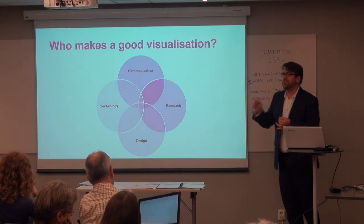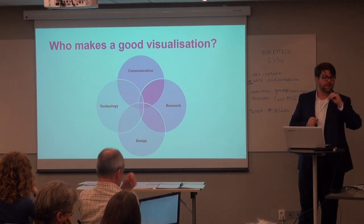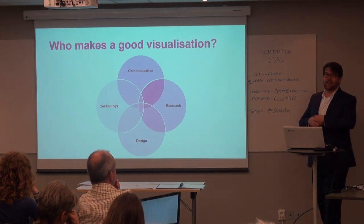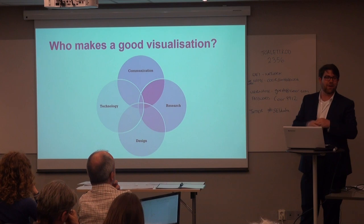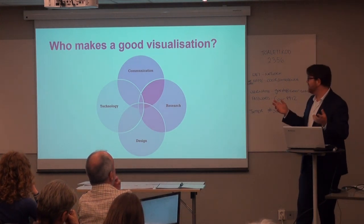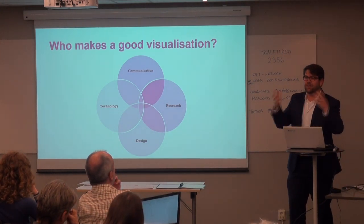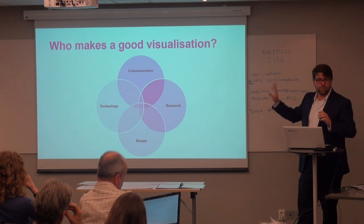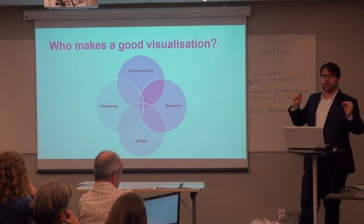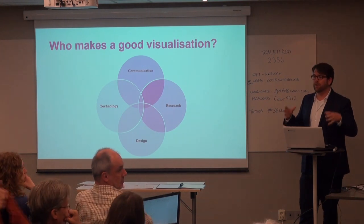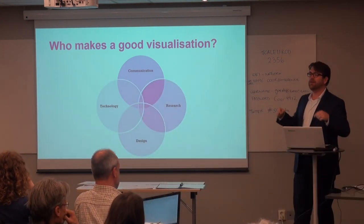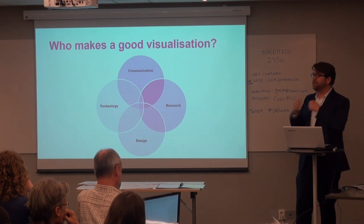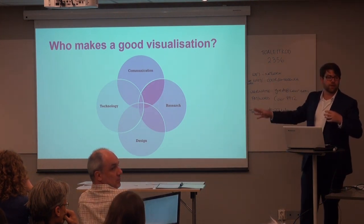We can't forget two other really important elements: communication — refining messages, editing, and translating the process of finding data into conveying information — and design, which includes so many important elements like color schemes. People tend to forget things like not using red and green together for colorblind accessibility reasons. It requires a mix of skills that are difficult to find in any one person. As an organization, it would be really useful to think about how to create effective teams that bring the right skill mix to the table.